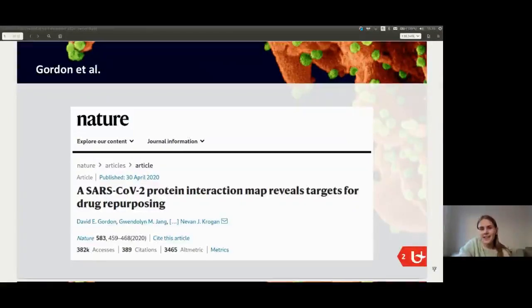So Gordon et al. performed a study to figure out targets for drug repurposing by creating a sort of blueprint of all of the human proteins that SARS-CoV-2 needs to infect human cells. They did this by performing affinity purification mass spectrometry on 27 SARS-CoV-2 proteins.